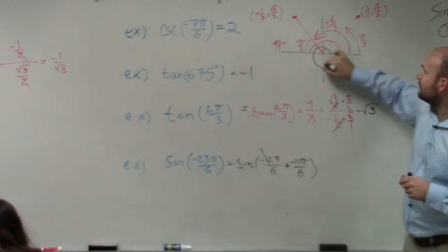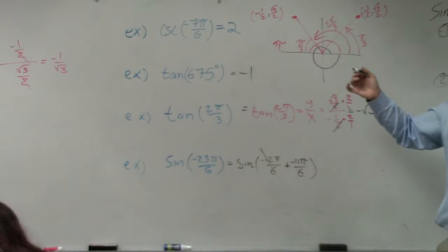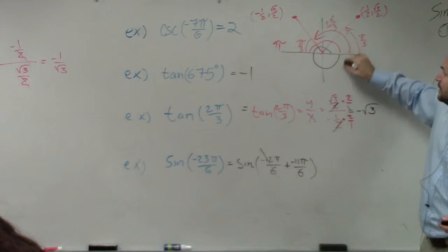Well, guys, remember, all the way around is 12 pi over 6, right? So if you go all the way around in the other direction, that is how far?